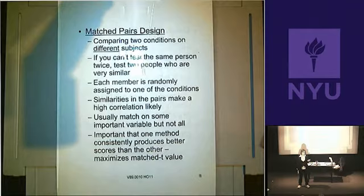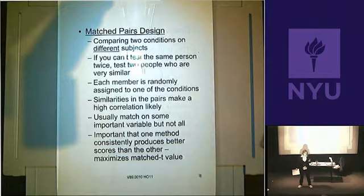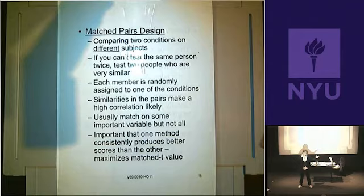Let's talk about matched pairs design. The two sets of scores are related, which is why we use this kind of t-test. In a repeated measures design, it's easy to see how the scores are related — you're measuring the same person more than once, so their scores will be similar. If you measure someone's memory for words now and again next week, chances are they'll be similar because it's the same person — that's why there's a correlation.